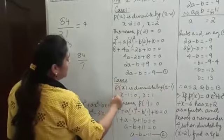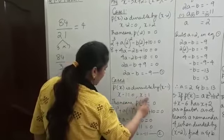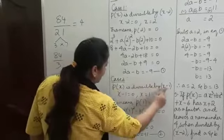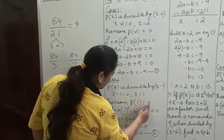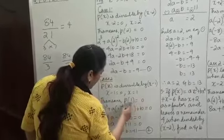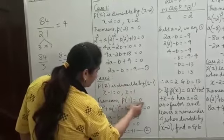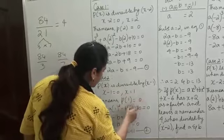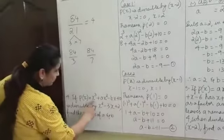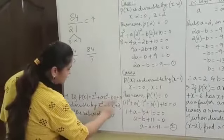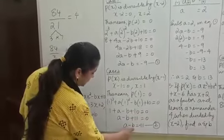Case 2: P of X is divisible by X minus 1. Setting X minus 1 equal to 0, X equals 1. This means when P of X is divided by X minus 1, the remainder is 0, so P of 1 equals 0. In the polynomial, replace X with 1: 1 plus A into 1 squared minus B into 1 plus 10 equals 0. Working this out gives us the second equation: A minus B equals minus 11.